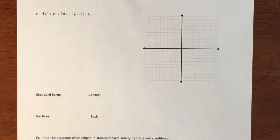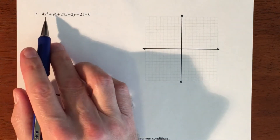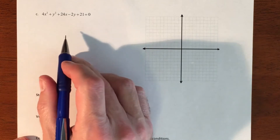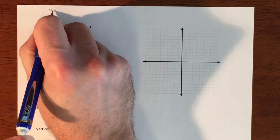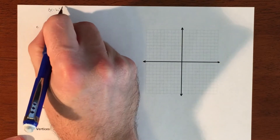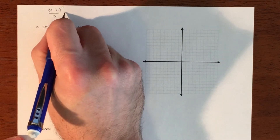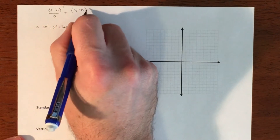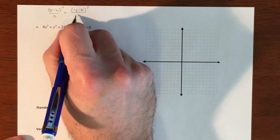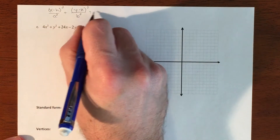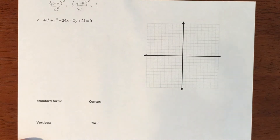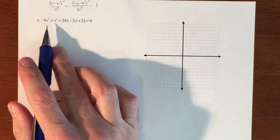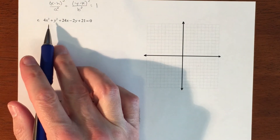In this video we are going to graph a conic — it's an ellipse. This is called general form; we want to convert it into graphing form, which means we want it to look like the standard ellipse equation. So we definitely have to do some manipulation to make that happen. One thing to recognize is: how do you know if it's a circle, ellipse, or hyperbola?